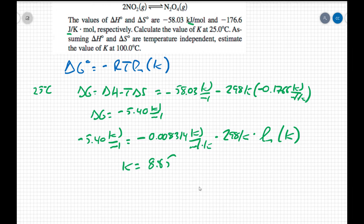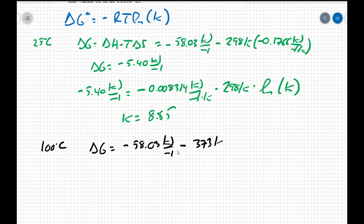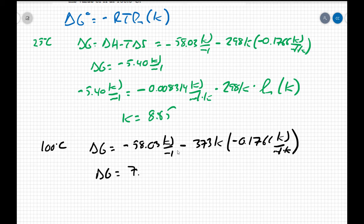Let's try this again at 100°C. Since ΔH and ΔS are temperature independent, they don't change. So ΔG = ΔH - TΔS = -58.03 kJ/mol minus 373 K times -0.1766 kJ/(mol·K). Now the temperature is 373 Kelvin, and ΔG equals +7.84 kJ/mol.